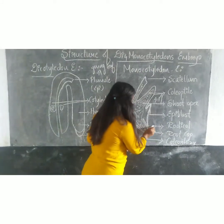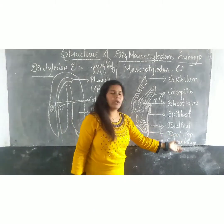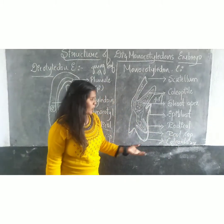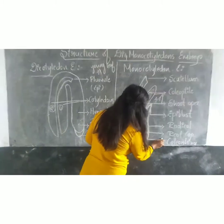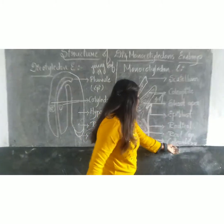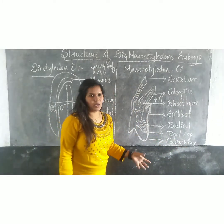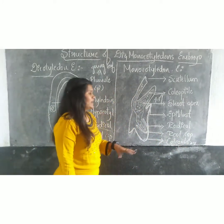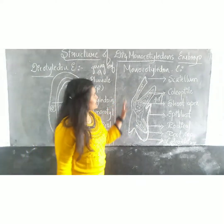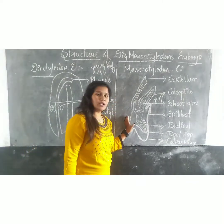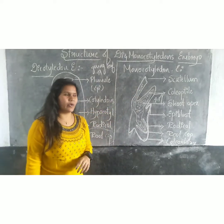Coming to the radical, which is the root cap. These root caps protect the roots. And coming to the churiorizer — what does it do? It protects or it terminates the growth of the root system. So this is the typical structure of the monocotteridon embryo.